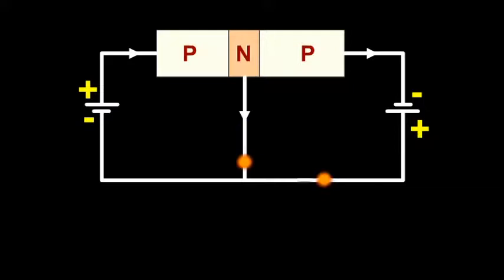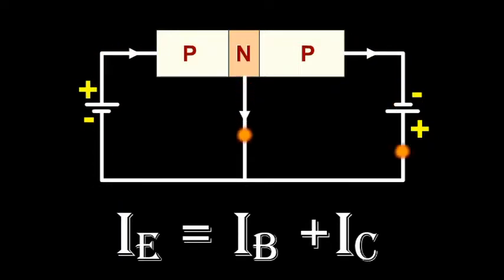Applying Kirchhoff's current law to the circuit, the emitter current is the sum of collector current and base current. That is, IE = IB + IC.